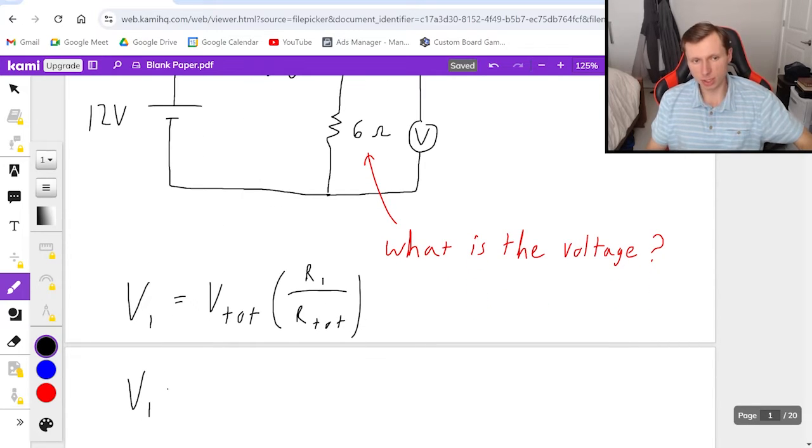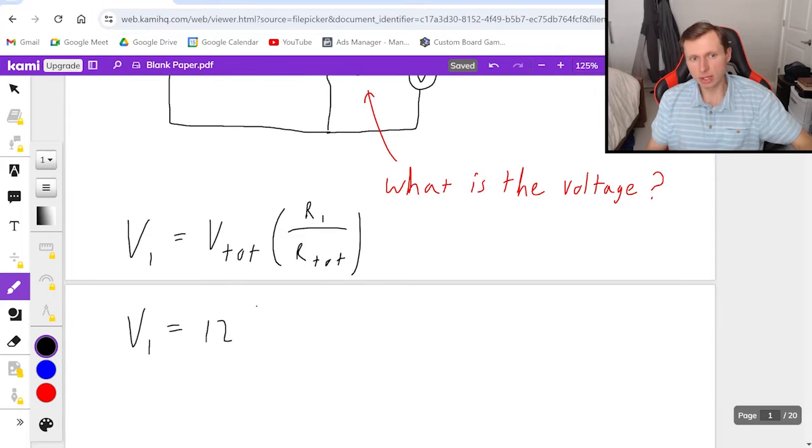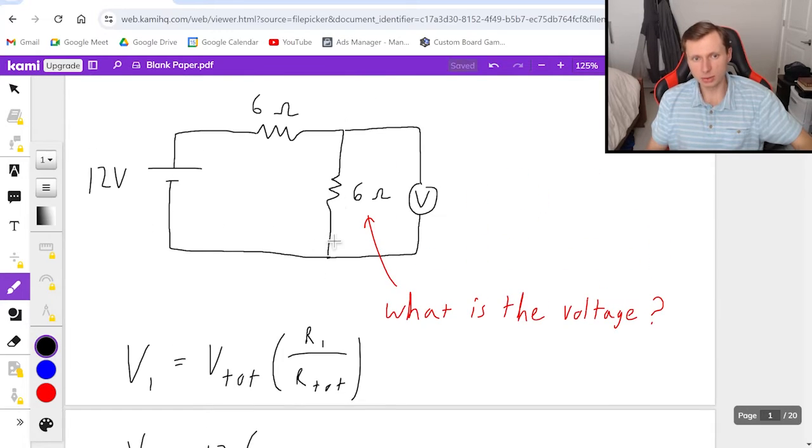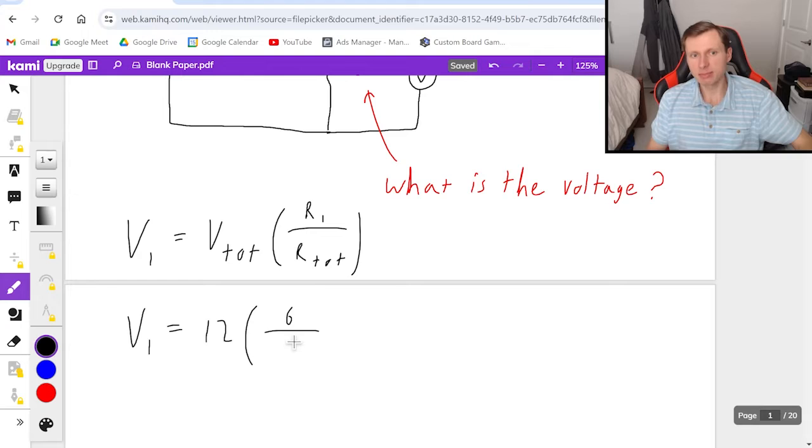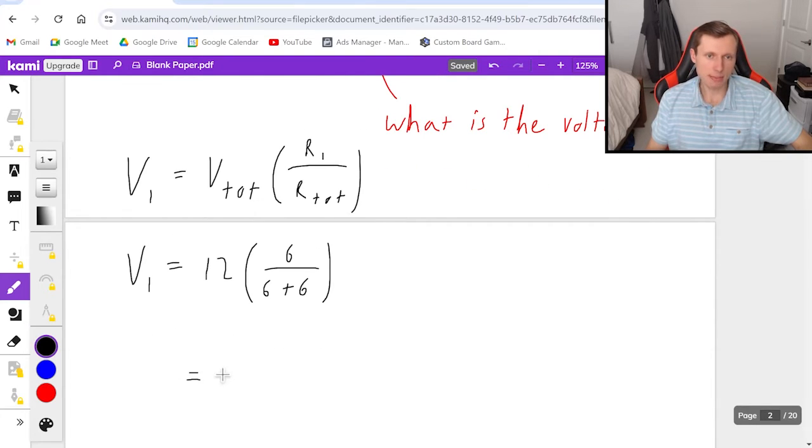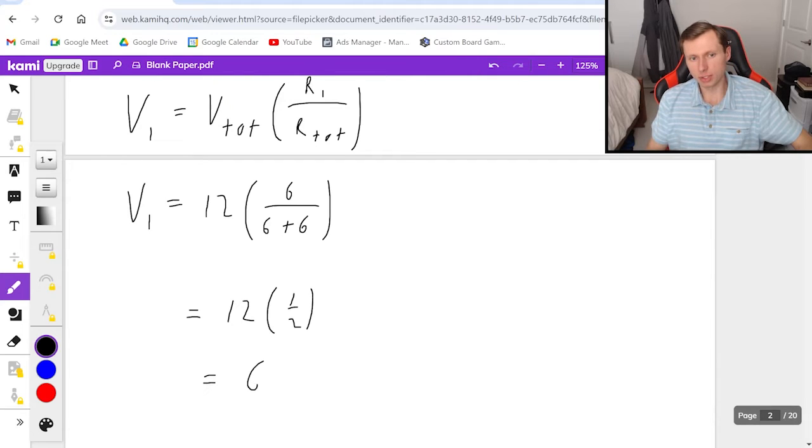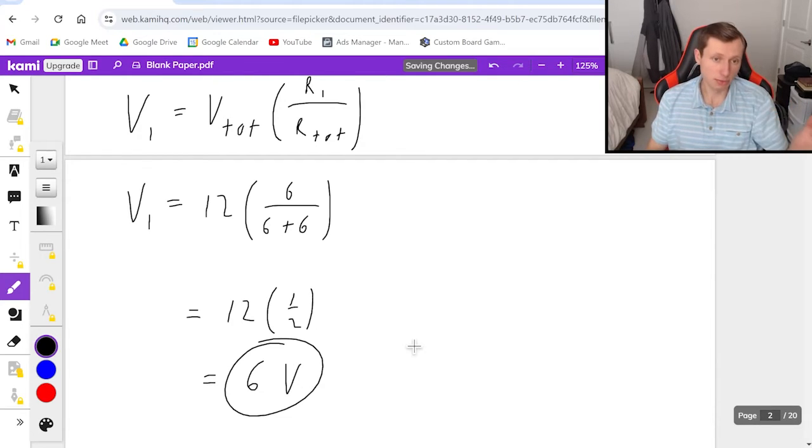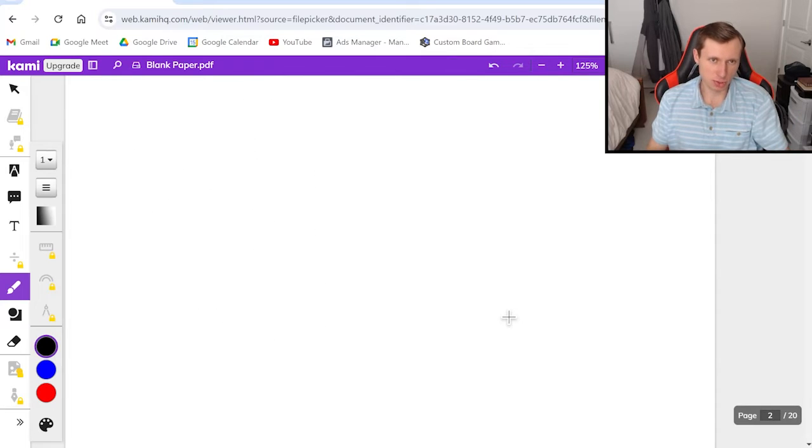So in this case V1 equals the total which is 12 times resistor one which is six divided by R total which is six plus six. And so that becomes 12 times one half. And so we'll get a voltage of six volts. That's the voltage on the resistor we wanted and since the question was asking about the voltmeter reading the answer is just six volts. So that's it for that first one.